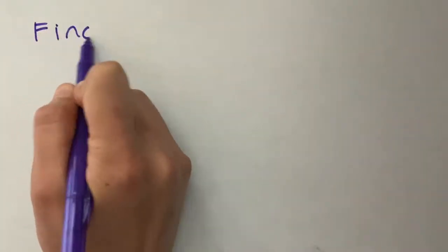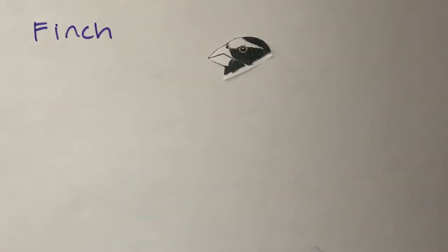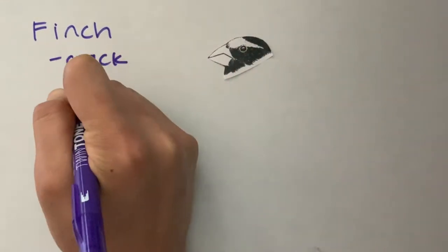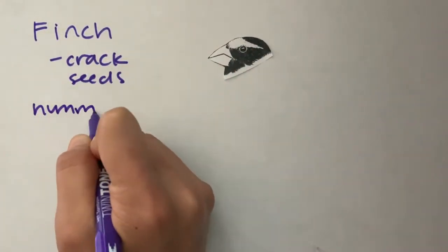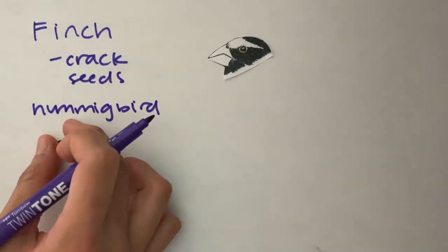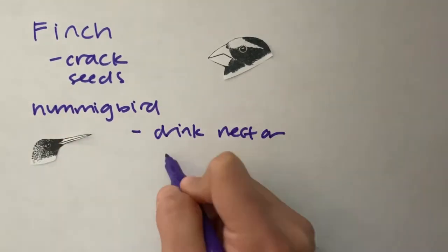For example, finches have cone-shaped bills that help them crack seeds and eat them. Hummingbirds have a long tubular bill that represents straws that they can use to sip nectar from flowers.